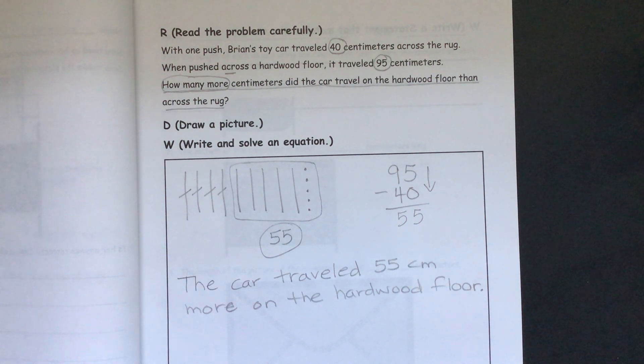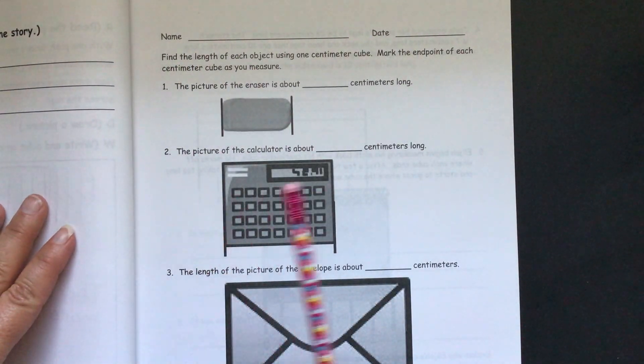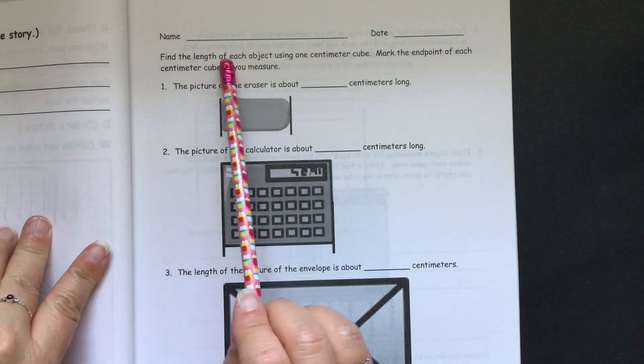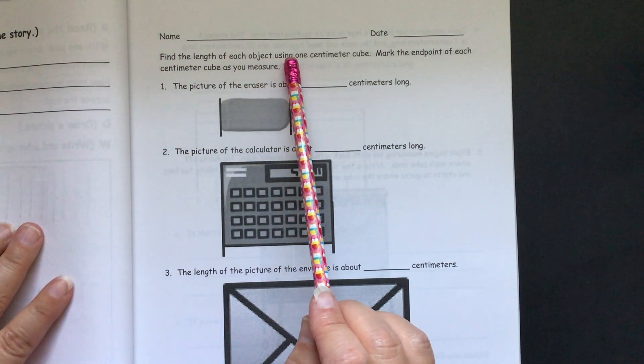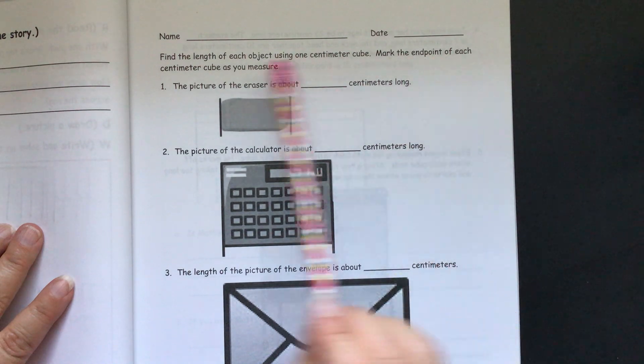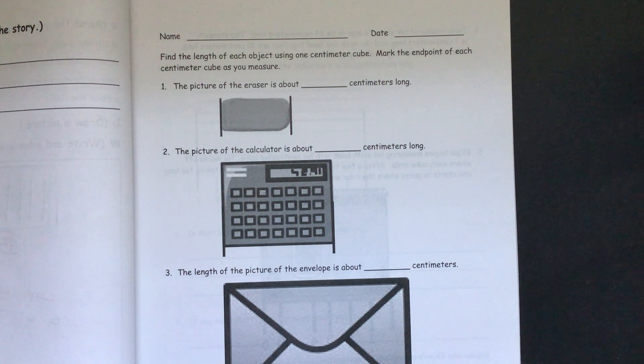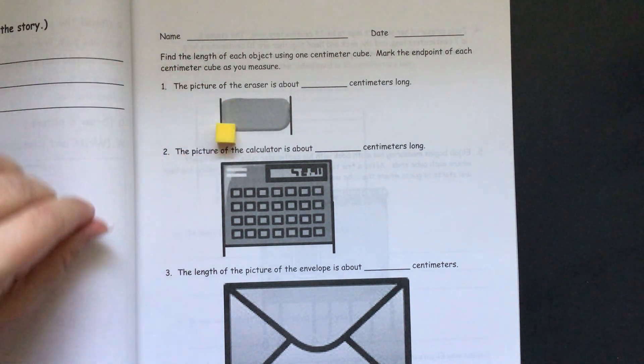So we'll move on to our problem set. Now we'll read our directions. Find the length of each object using one centimeter cube. Mark the end point of each centimeter cube as you measure. Remember last time we had lots of centimeter cubes and we had to line them up and make sure they touched. But this time they're only giving us one centimeter cube.